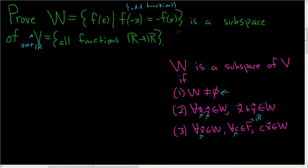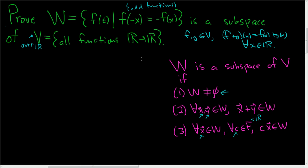Before we start the proof, let me show you how you add vectors in this vector space. Given f and g in V, the sum f plus g is defined by: f plus g of x equals f of x plus g of x, for all x in ℝ. Likewise, if you take a scalar c times f, this is defined to be c times f of x, for all x in ℝ.